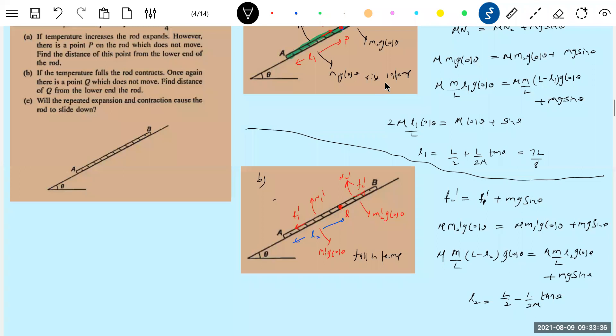Now, look at the last part. Will the repeated expansion and contraction cause the rod to slide down? Yes or no? Anybody wants to do this? This is very important. Students should analyze which will be greater, L1 or L2. I think that finally matters. So this depends on the balance. Anybody value of L2? Okay. 1 by 8. Now, which will be?